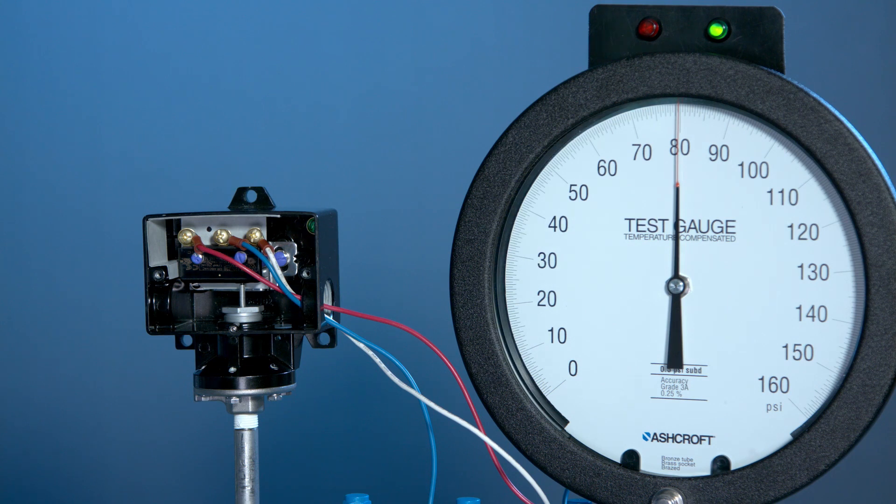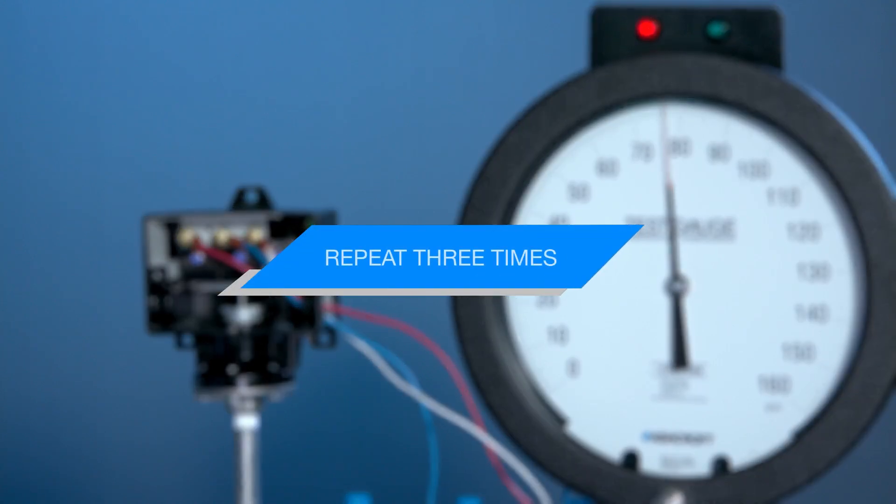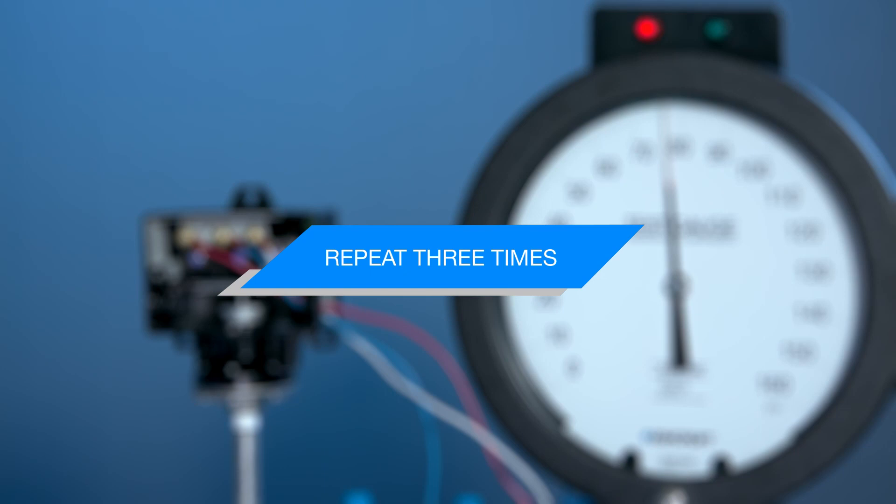It looks like it's right at 80 now. Now we can measure the dead band, so we're going to turn the pressure back until the switch turns off. It's 77.5, so it would be 2.5 PSI dead band for this switch. Now we would just repeat this measurement to verify the set point.